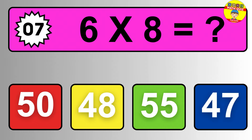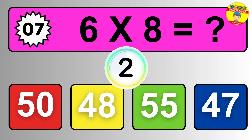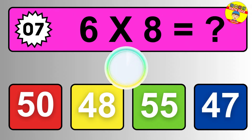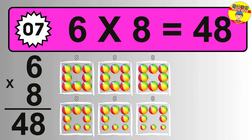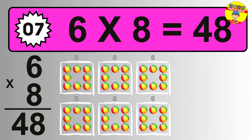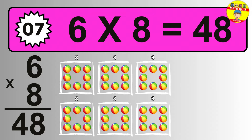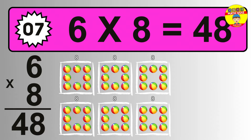Question seven. Six times eight equals what? The answer is six times eight is forty-eight. To calculate, we have six groups with eight balls each one. So how many balls do we have? Forty-eight balls.